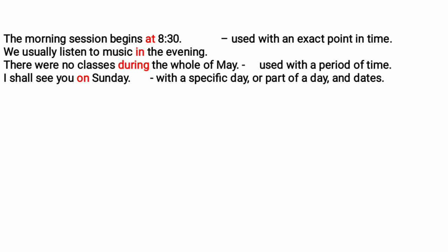When we are giving a specific day or a specific part of a day, we use 'on.' For example, 'I shall see you on Sunday morning' — that is a specific part of the day. Or you can give a date: 'I shall see you on the 15th of May.' So for days, specific parts of the day, or dates, we use 'on.'